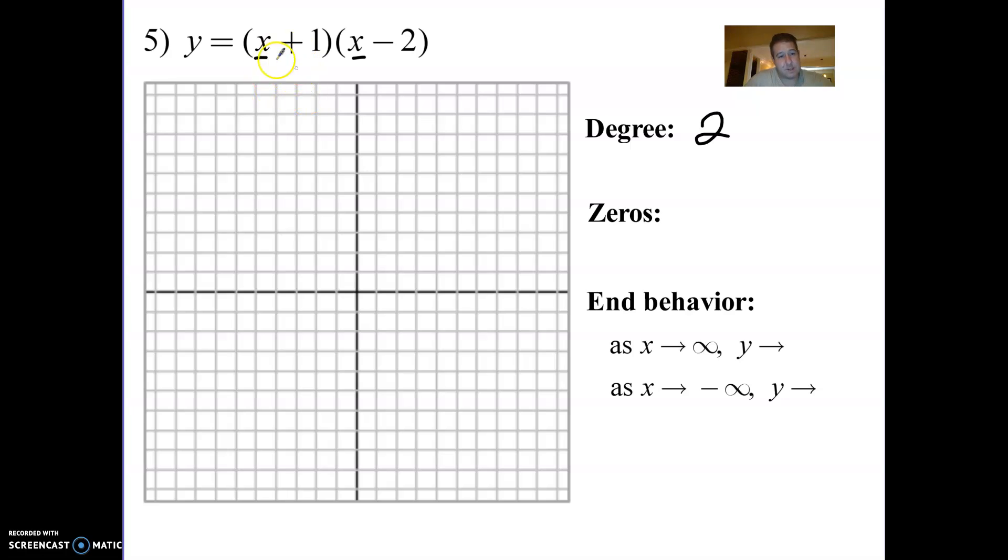The zeros, I know the zeros are going to be if I set each one of these factors equal to zero and solve. So I know I'm going to have a zero at negative 1 and I'm also going to have a zero at positive 2. And last thing I need to know is the end behavior. There is no number out here, so it's really just a 1, it's a positive 1. Since it has a leading coefficient of 1, then you know it's going to be going up. So it's going to go up like this, something kind of like that.